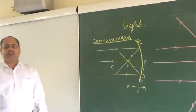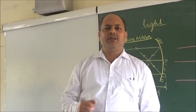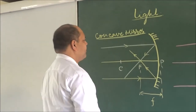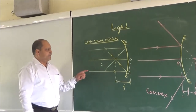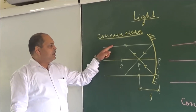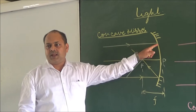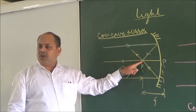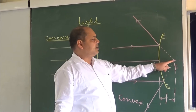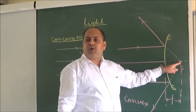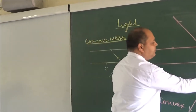If you are asked to define the focus of a mirror in general, you would say: all the rays coming parallel to the principal axis, after reflection from the mirror, either meet at a point on the principal axis — in the case of a concave mirror — or they appear to come from one particular point on the principal axis — in the case of a convex mirror. That point is known as the focus.